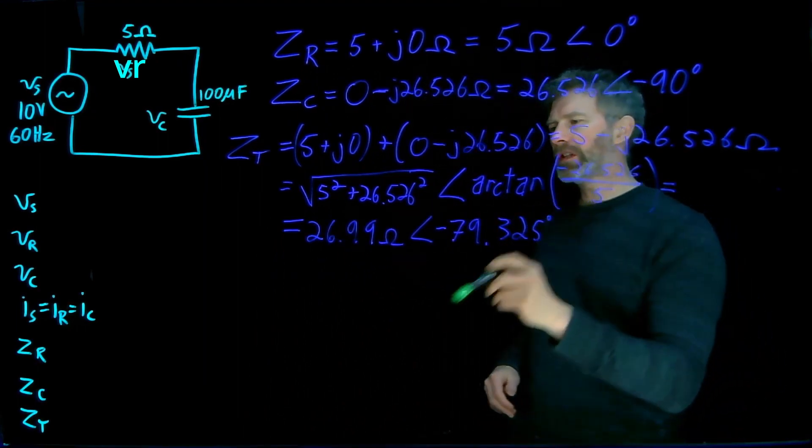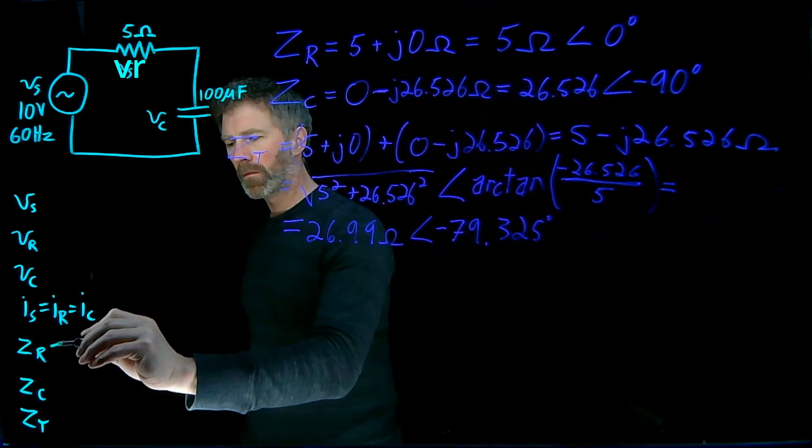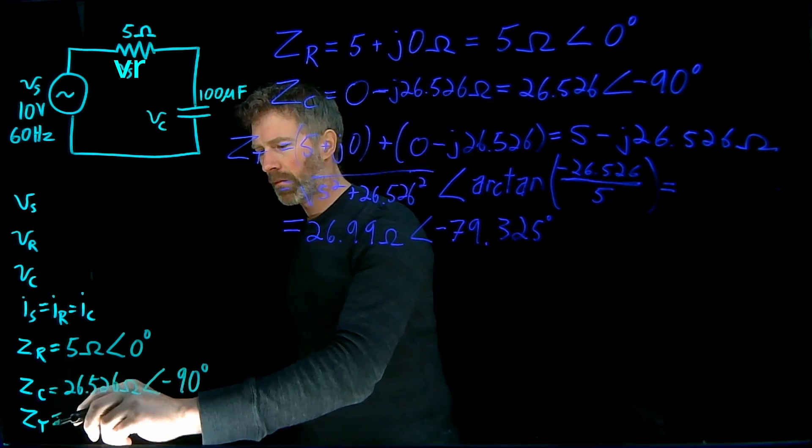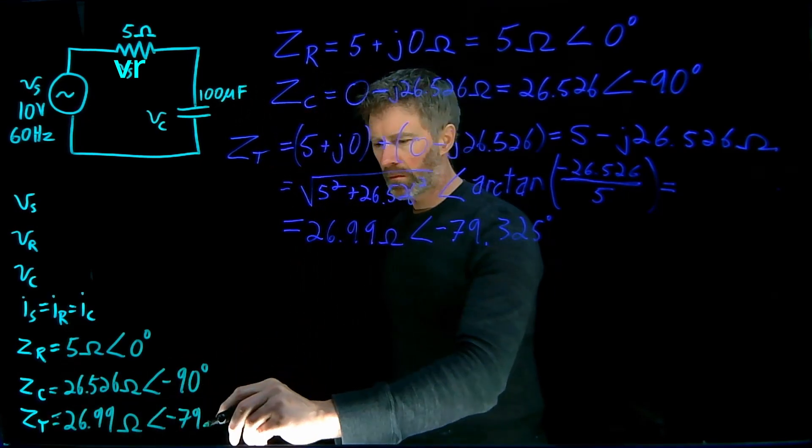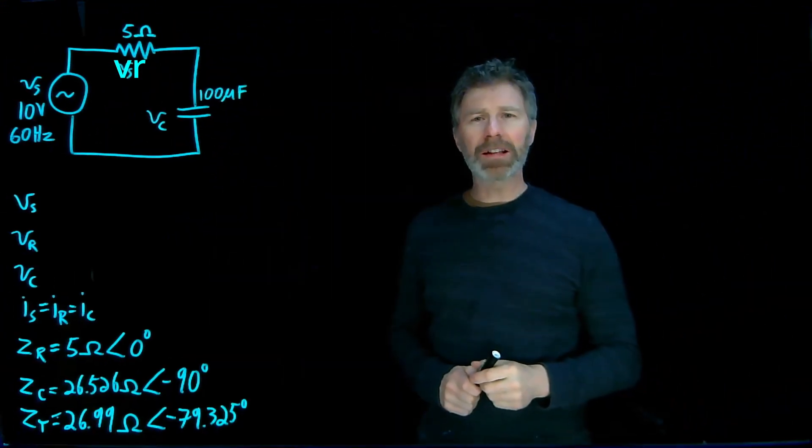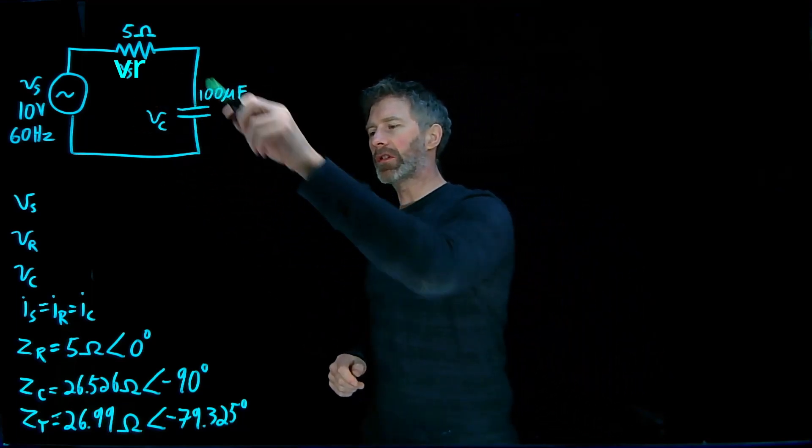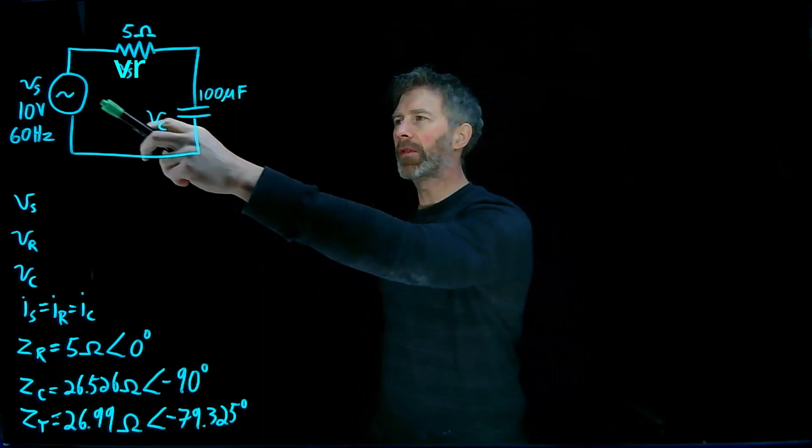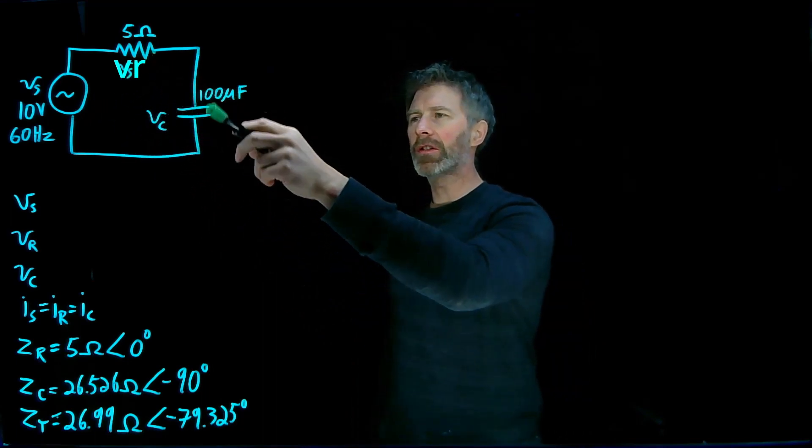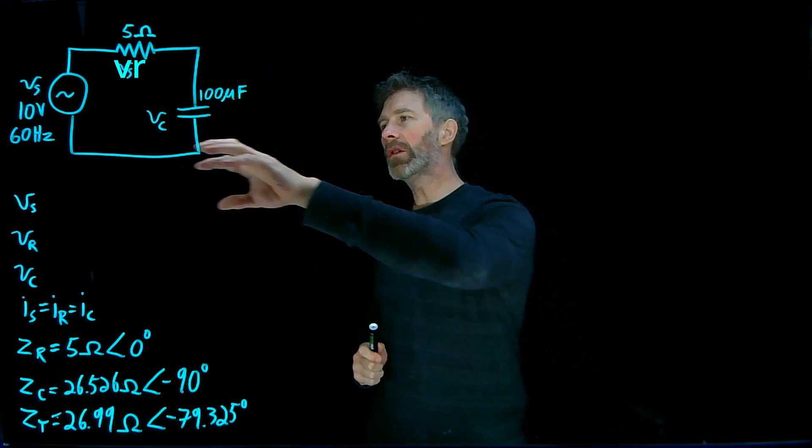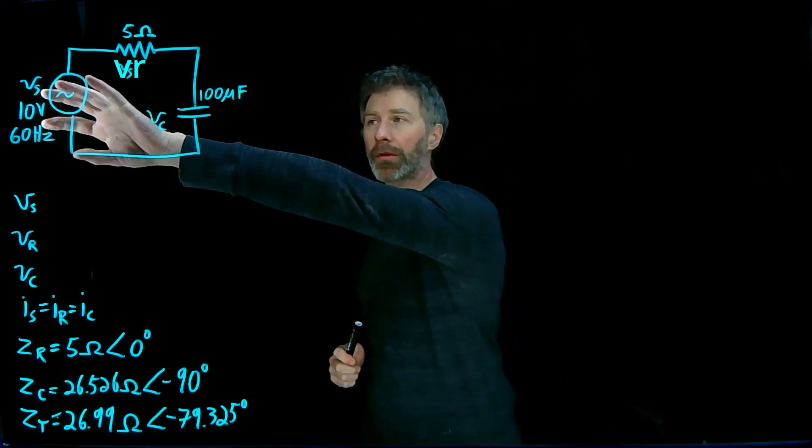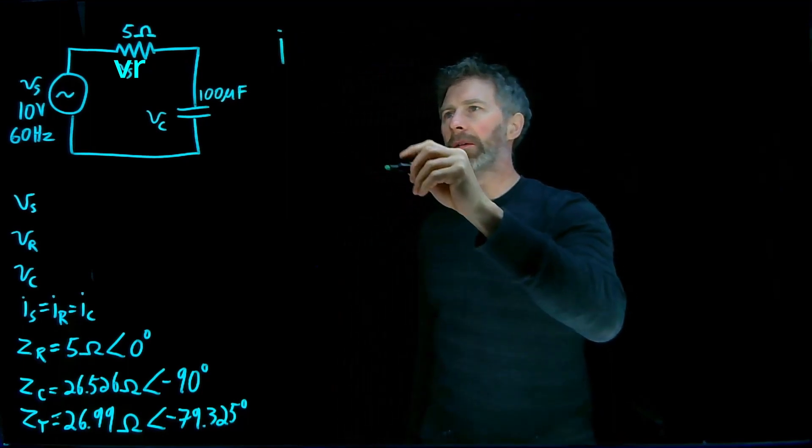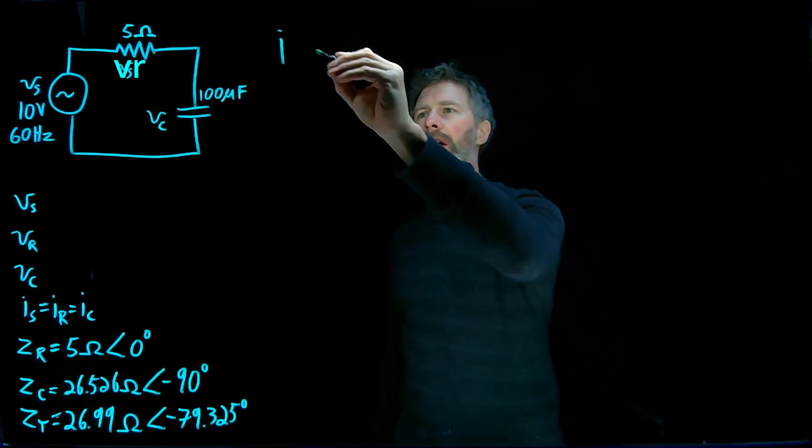Now let's transfer these values over to this table I have here. So the next thing to calculate is the current in the circuit. Since everything is in series, the current is going to be the same from the source as it is through the resistor as it is through the capacitor.